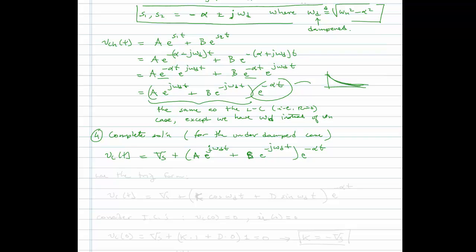Using the trig form: V_C(t) = V_S + [C·cos(omega_D·t) + D·sin(omega_D·t)]·e^(-alpha·t). Since C conflicts with the capacitor symbol, we'll rename it K: V_C(t) = V_S + [K·cos(omega_D·t) + D·sin(omega_D·t)]·e^(-alpha·t). That is our complete solution.